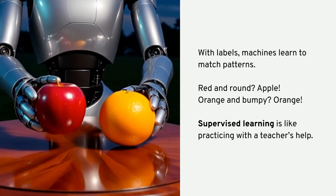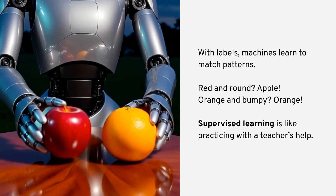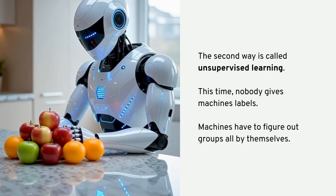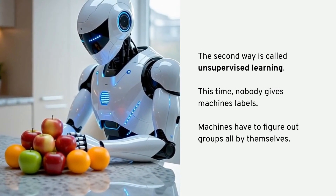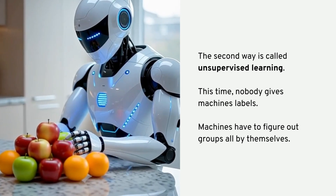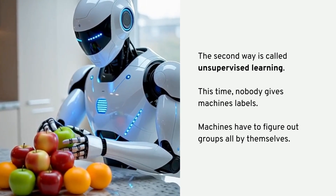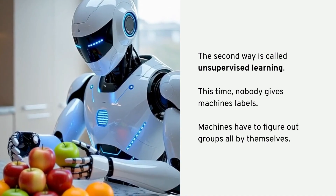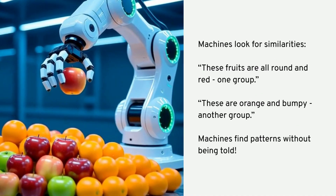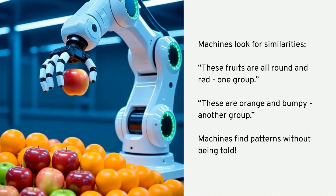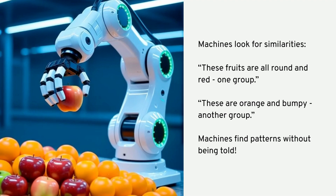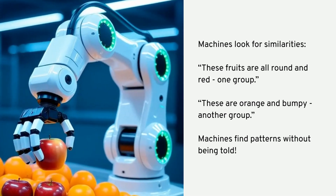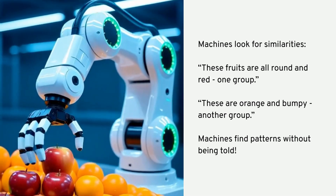Supervised learning is like practicing with a teacher's help. The second way is called unsupervised learning. This time, nobody gives machines labels — machines have to figure out groups all by themselves. They look for similarities: these fruits are all round and red, one group; these are orange and bumpy, another group. Machines find patterns without being told.